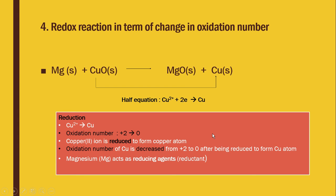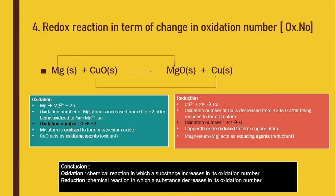In summary: oxidation is the process where a substance increases in oxidation number, whereas reduction is the process where a substance decreases in oxidation number. Here, magnesium undergoes oxidation and acts as the reducing agent, while copper oxide undergoes reduction and acts as the oxidizing agent. You must understand this clearly so you do not get confused.